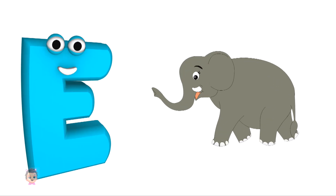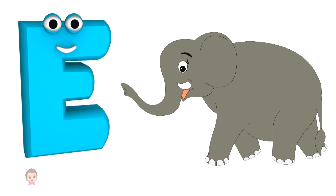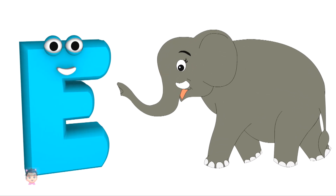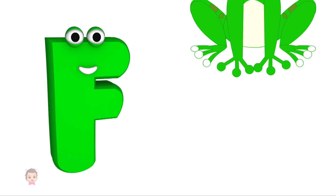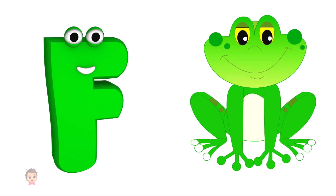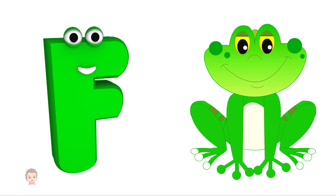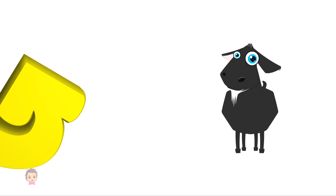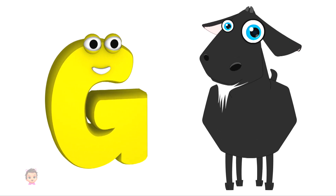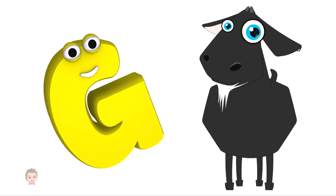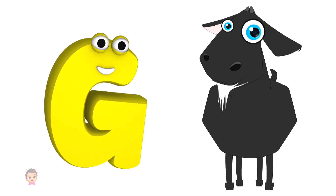E is for elephant, ee, elephant. F is for frog, frog. G is for goat, guh, goat.